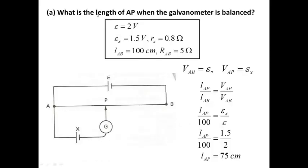What is the length AP when the galvanometer is balanced? So what is the balance length AP? I've already gathered all the information: EMF, EMF of cell X, internal resistance, length, and resistance of AB.